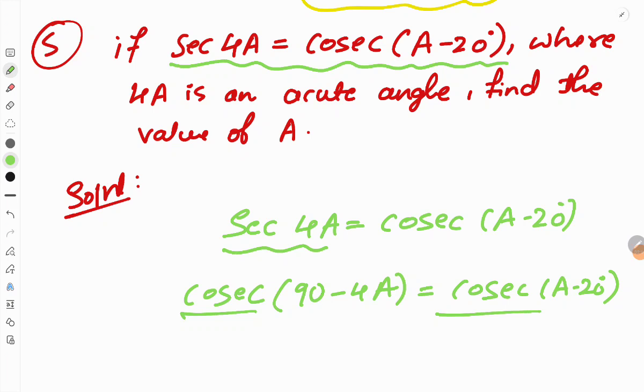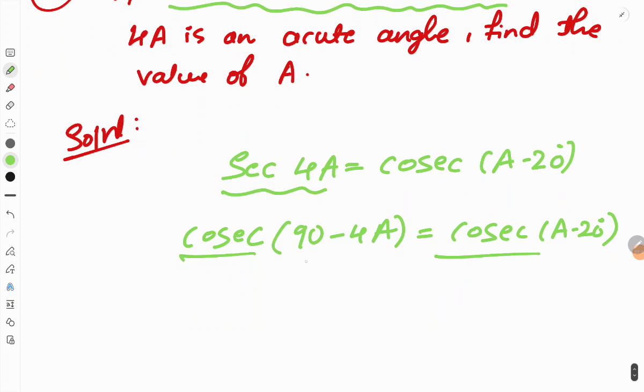When angles have the same function, we can equate them. So 90 minus 4A equals A minus 20 degrees.